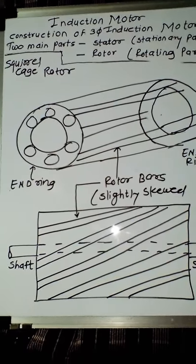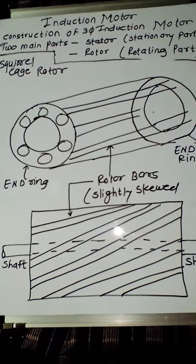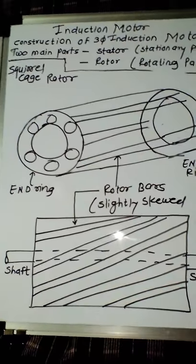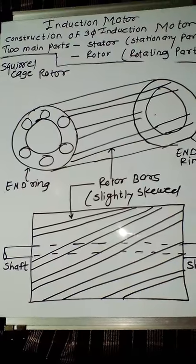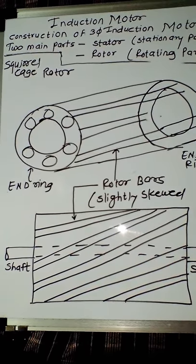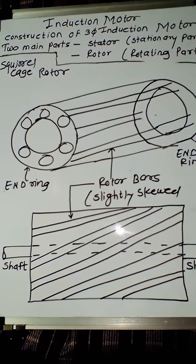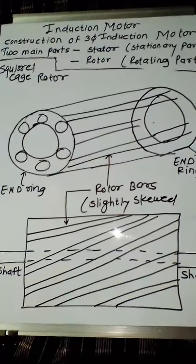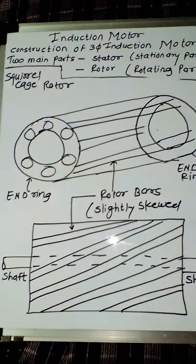Almost 90 percent of three-phase induction motors are of squirrel cage type because the squirrel cage rotor is simpler in construction and it is rigid. It has a longer life compared to the slip ring type rotor. The squirrel cage rotor has a really rigid and very simple construction.